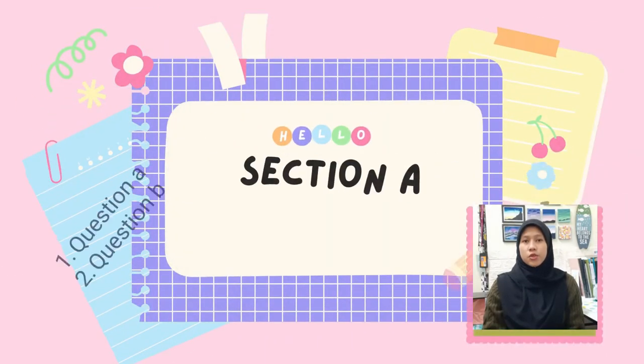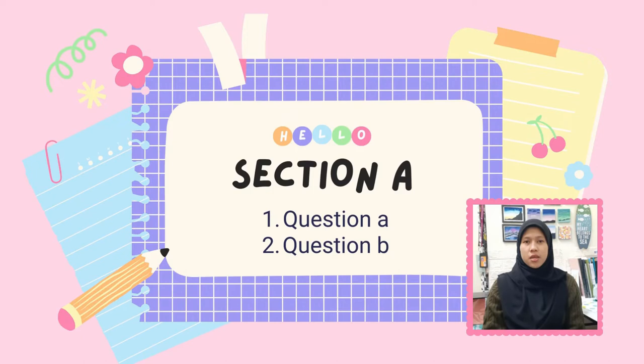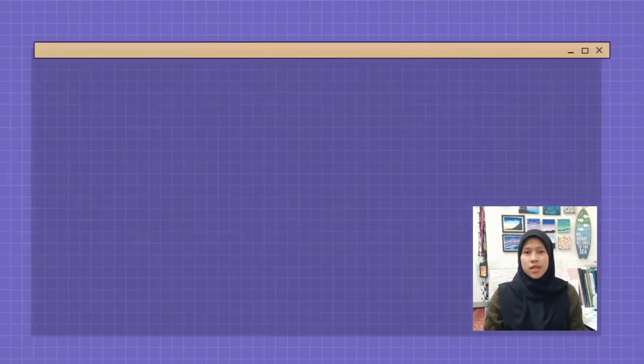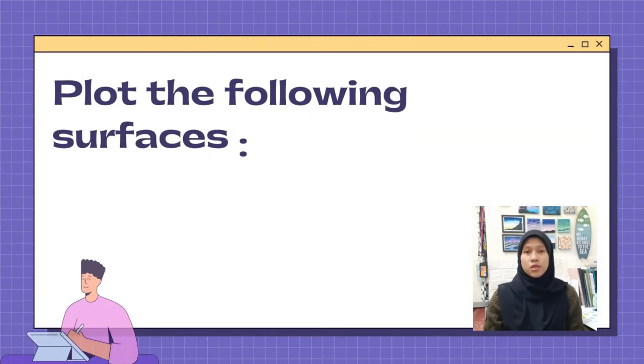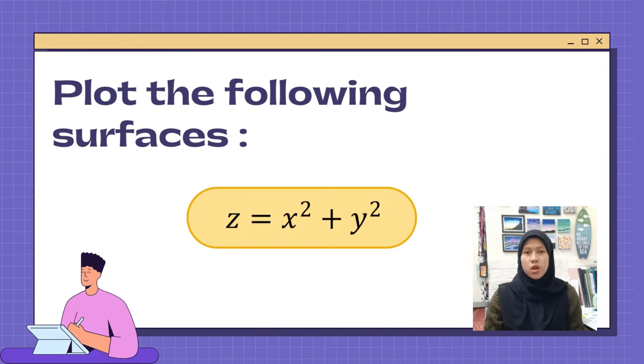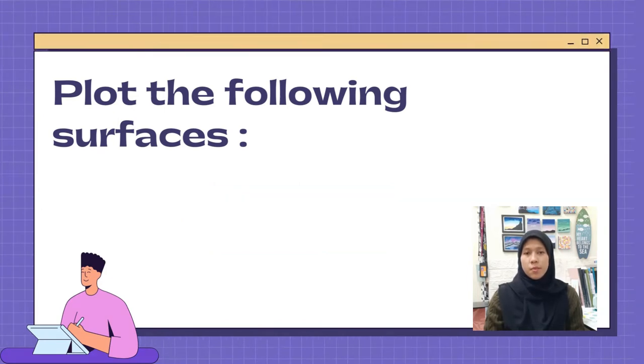For Session A, I choose Question A and B. Let me explain Question A. The question asks us to plot the equation Z equal to X square plus Y square. Let me show you how to plot it into the Maple software.